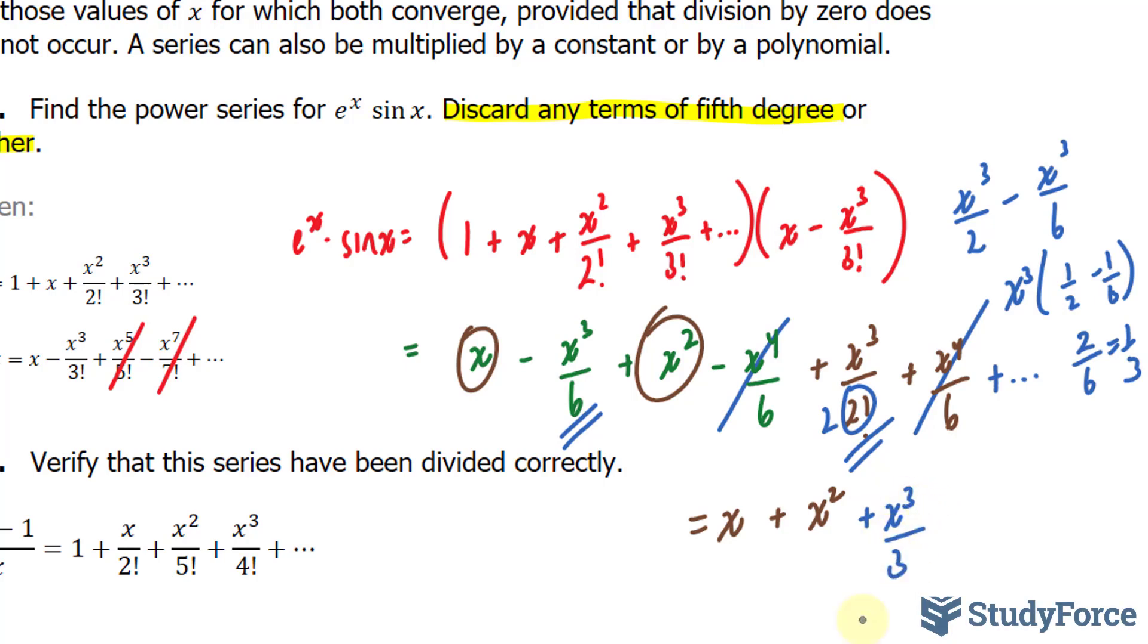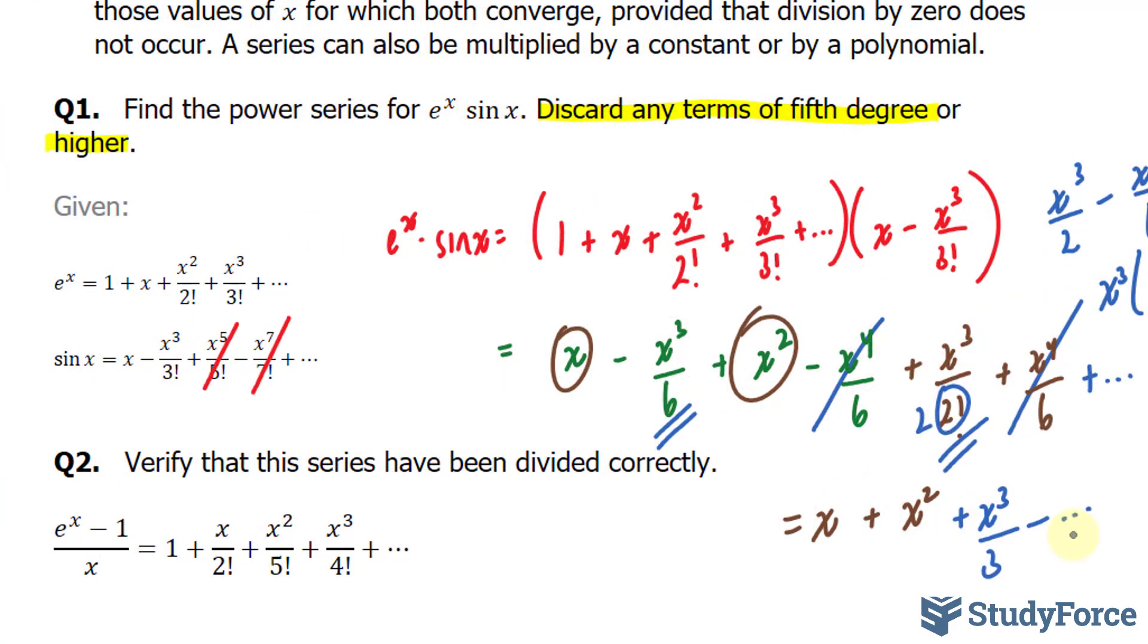So our next term in line would be plus x to the power of 3 over 3. Now the fourth term would have been negative, so I'm just going to write down negative dot, dot, dot. That right there represents the product of e to the power of x times sine x.